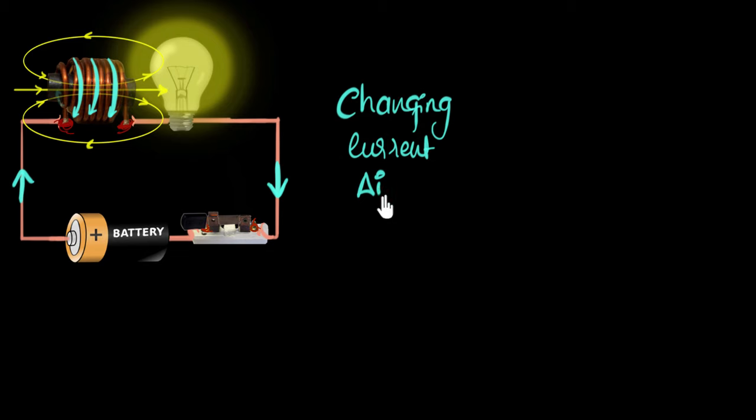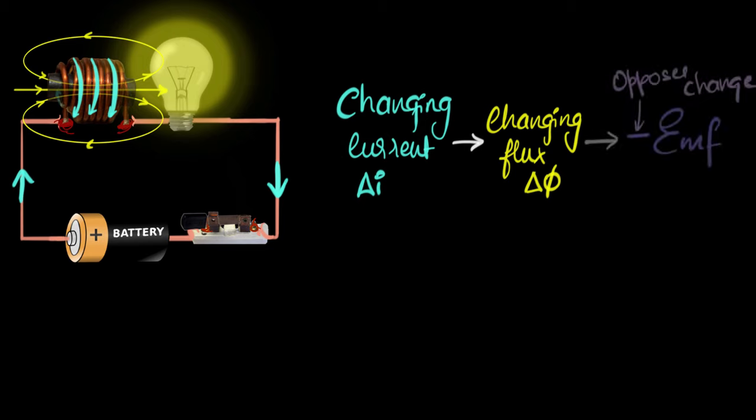So let's slowly write this down. What we are seeing at this moment is that there is a changing current, let's call it ΔI. Because of that changing current, there is a changing flux. And we know from Faraday's law that that changing flux causes the coil to produce or induce an EMF, and that EMF always tends to oppose the change.